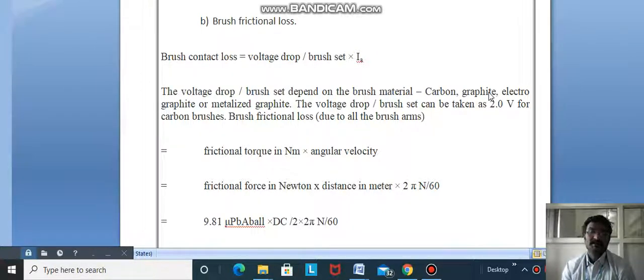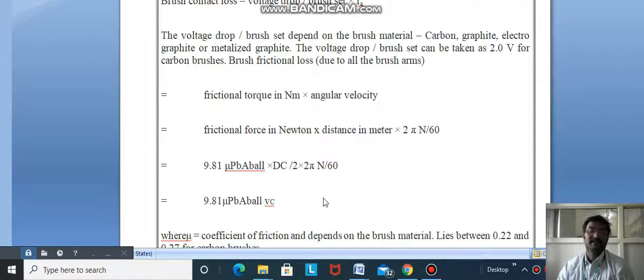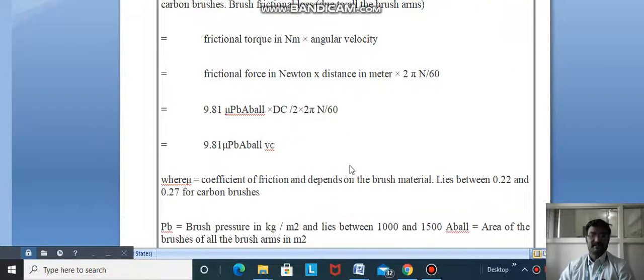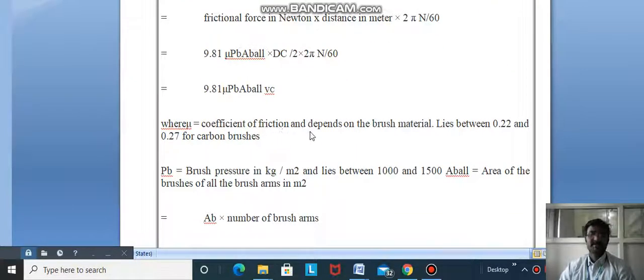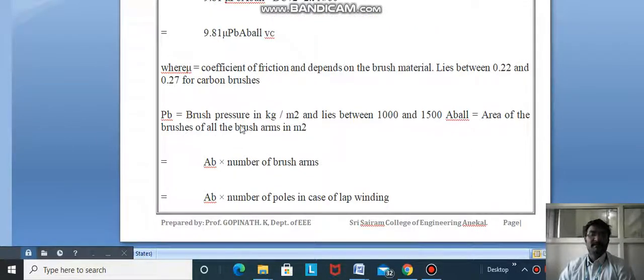The voltage drop per brush set can be taken as 2.0 volt for carbon brushes. Brush frictional loss equals frictional torque in newton meter multiplied by angular velocity, which equals friction force in newtons multiplied by distance in meters times 2π N/60. This equals 9.81 μ Pb Ab times Dc/2 times 2π N/60, where μ is the coefficient of friction.